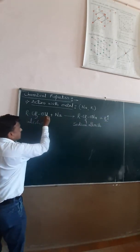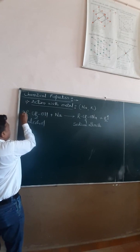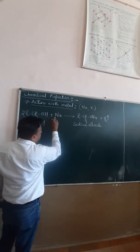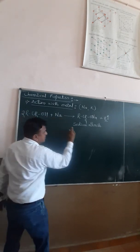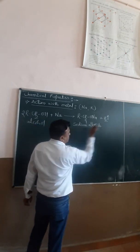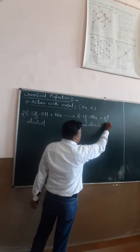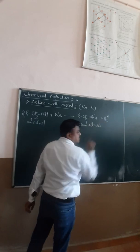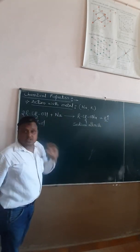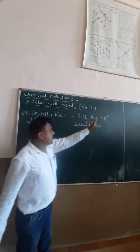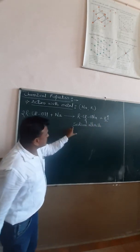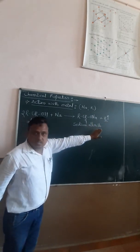When alcohol reacts with an electropositive metal like sodium, it forms sodium alkoxide and hydrogen gas. This shows that alcohol has acidic nature — the release of hydrogen shows the acidic nature. Sodium alkoxide is easy to form.